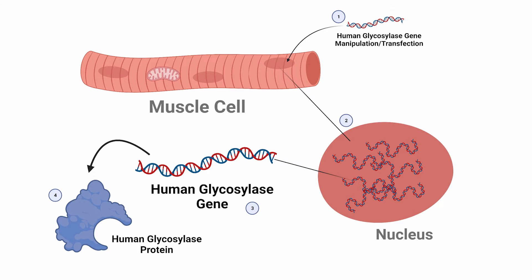Before we get into the data, the researchers manipulated some of the cells to produce more of a particular enzyme known as human glycosylase, an enzyme that repairs DNA. Why might that be important? In the previous video, we discussed the effects saturated fat had on mitochondrial DNA — genes found inside the mitochondria — and one effect was increased damage to that mitochondrial DNA. The use of this enzyme drastically reduced that damage. Whether it would also affect insulin signaling was yet to be discovered. So there are now two conditions: cells with this enzyme highly expressed, and cells left alone without genetic manipulation.